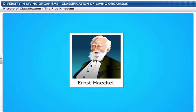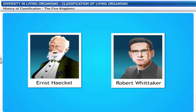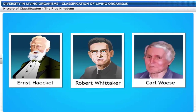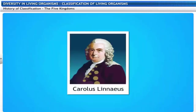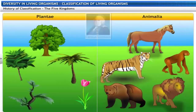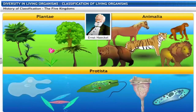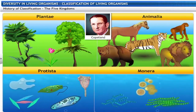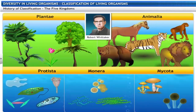Biologists such as Ernst Haeckel, Robert Whittaker and Carl Woese have tried to classify living organisms into broad categories called kingdoms. Carolus Linnaeus classified all living organisms as Plantae and Animalia. Ernst Haeckel proposed Protista to include eukaryotic unicellular organisms. Copeland introduced Monera to include all the prokaryotic organisms. In 1969, Whittaker proposed Mycota to include fungi. This led to a five-kingdom classification proposed by Whittaker, which is still used today.